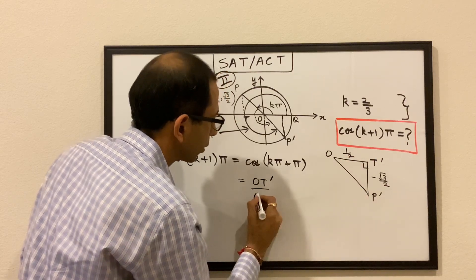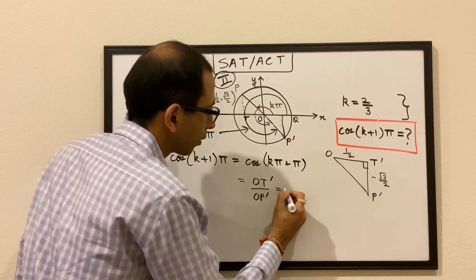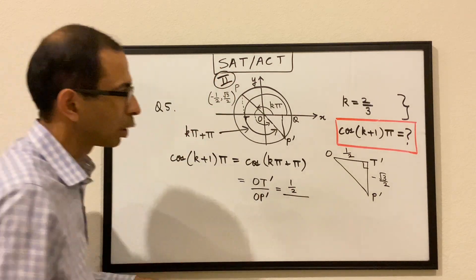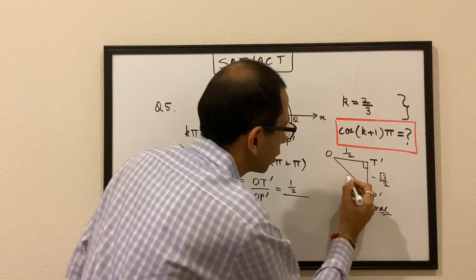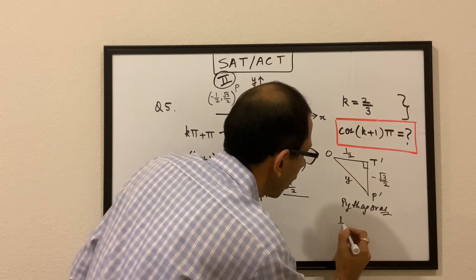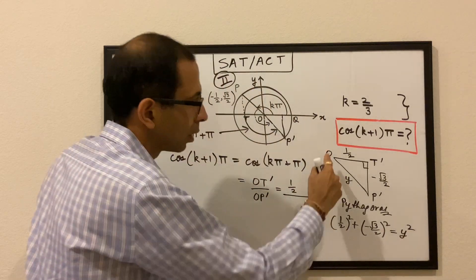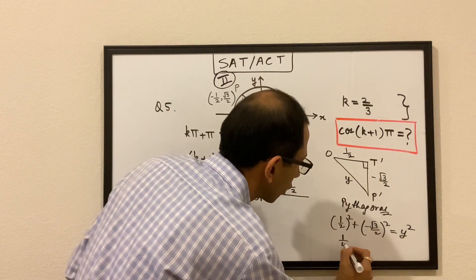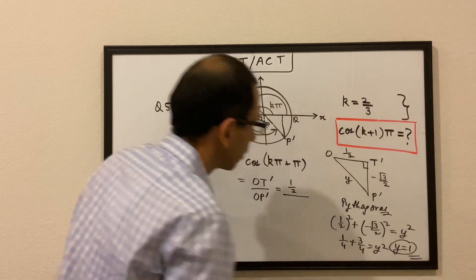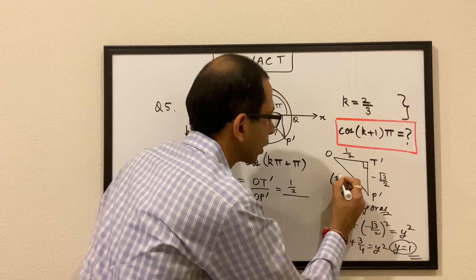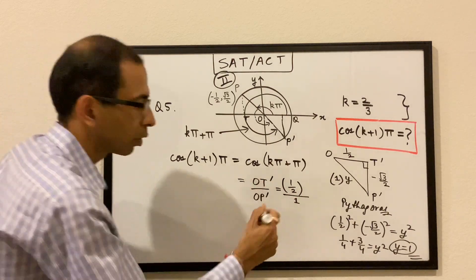Cos of this angle = OT′ over OP′. OT′ = 1/2; we find OP′ using the Pythagorean theorem: (1/2)² + (√3/2)² = y², giving 1/4 + 3/4 = y², so y = 1. The hypotenuse OP′ = 1. Therefore cos((k + 1)π) = 1/2 over 1 = 1/2.